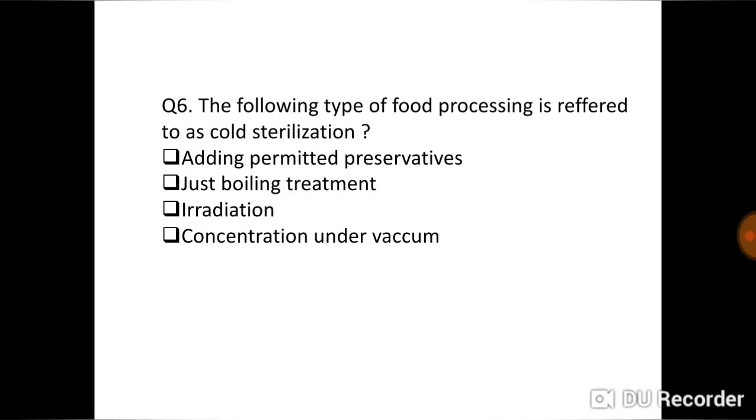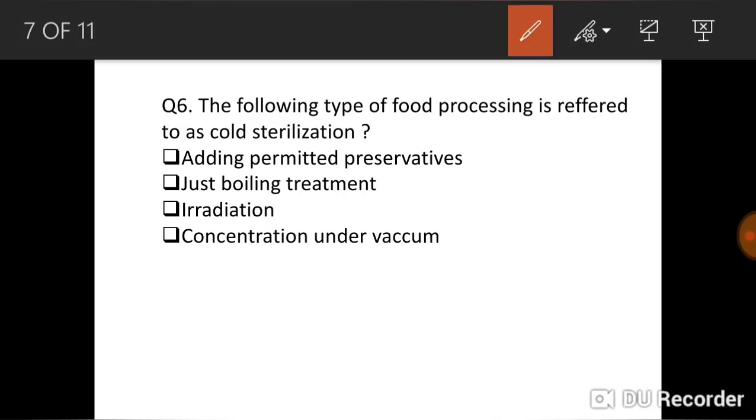The next is: The following type of food processing is referred to as cold sterilization. I discussed already previously what is cold sterilization. The type of food processing which is referred to as cold sterilization is food irradiation. Food irradiation is also known as cold sterilization. So the correct answer is irradiation, meant to remove the microbial growth or to kill microorganisms in the food.